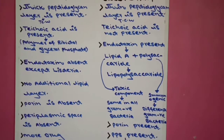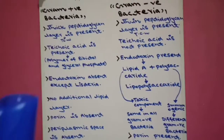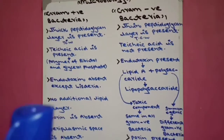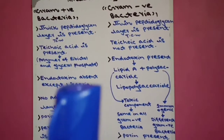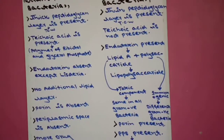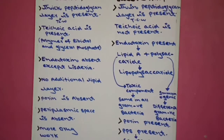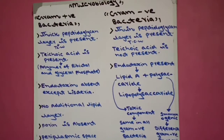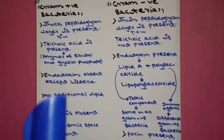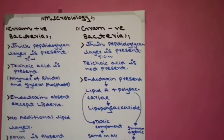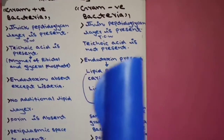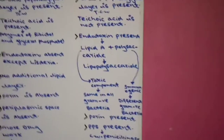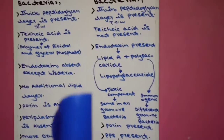The third difference: in gram positive bacteria, endotoxin is absent — except in Listeria. Listeria is the only gram positive bacteria in which endotoxin is present, but in all other gram positive bacteria endotoxin is absent. In gram negative bacteria, endotoxin is present.